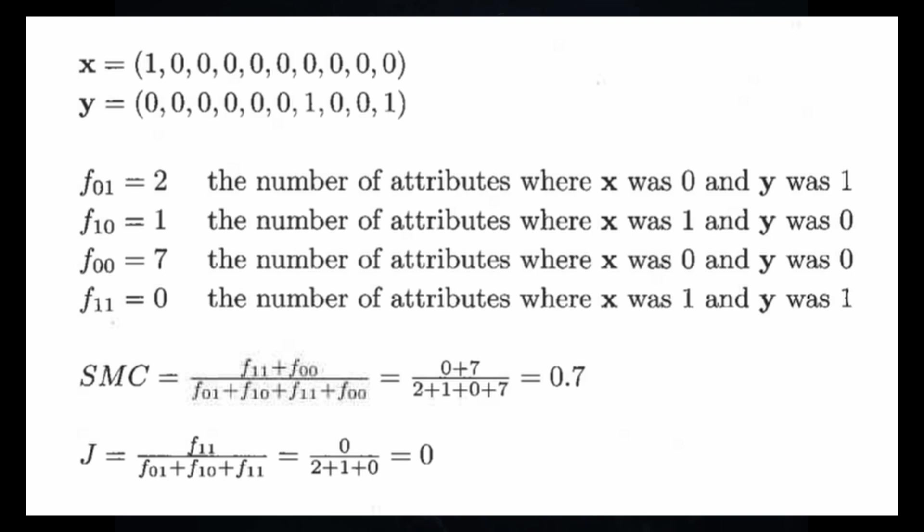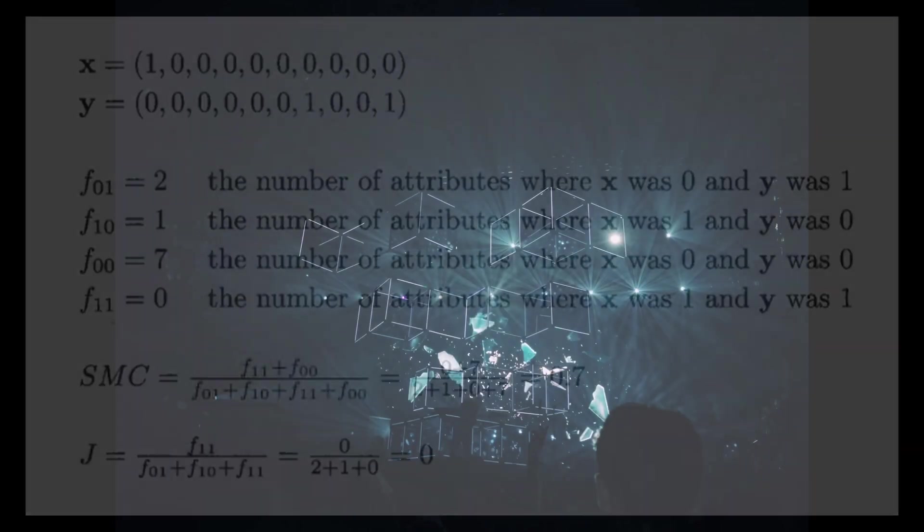Let's take an example with two vectors x and y of 10 bits each. The f01 similarity coefficient occurs at two places — the seventh and tenth bit where x is zero and y is one. f10 occurs at one place — the first bit. f00 accounts for seven bits, and f11 is not present at all. Using the formulas: the Simple Matching Coefficient comes out to 0.7, whereas the Jaccard coefficient comes out to zero in this particular case.